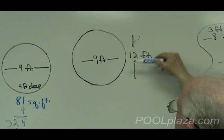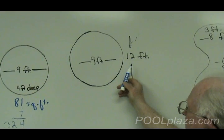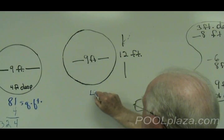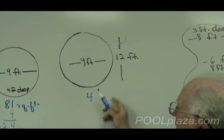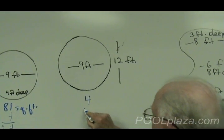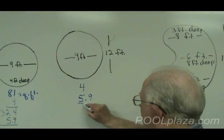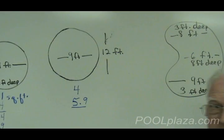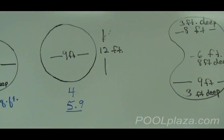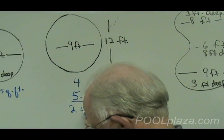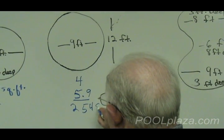And then multiply again by the depth, which we'll say in this case is 4 feet. And then multiply again by 5.9 for an oval pool. And that will tell you that this pool is 2,548 gallons.